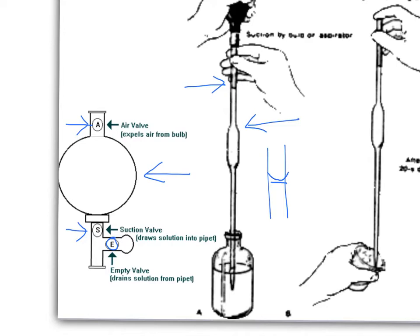You start off by expelling air from the bulb. So you squeeze at A with your fingers, you pinch your fingers together at A and you squish in the bulb and the air will come out of it and it will be like a sucked out balloon.